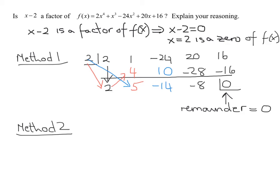then you've proved that x minus 2 is a factor. So we're going to have to figure out what f of 2 is. So it's 2 times 2 to the 4th, plus 2 cubed, minus 24 times 2 squared, plus 20 times 2, plus 16.